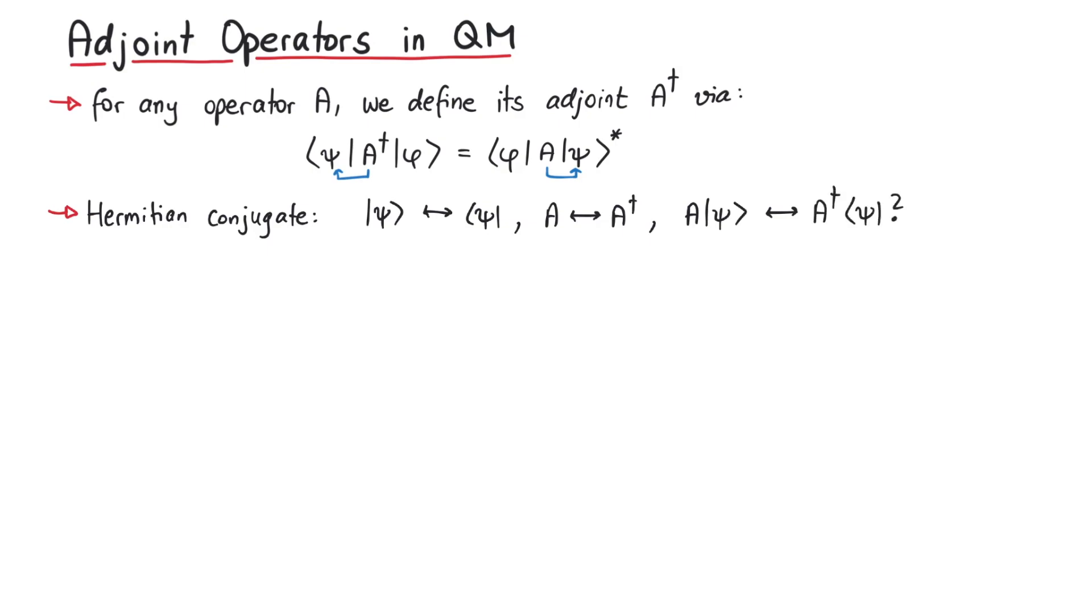But to be sure, let's calculate it. We know that bra states act as functionals on ket states, yielding the inner product of those states. And from the properties of inner products in complex Hilbert spaces, we know that we can exchange the two states if we add a complex conjugation.